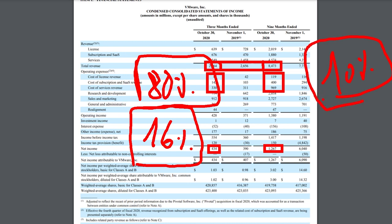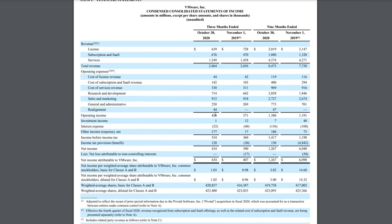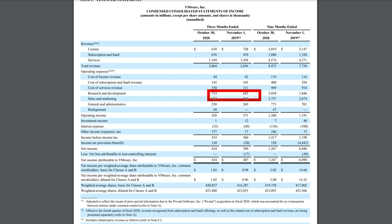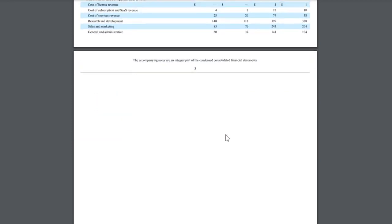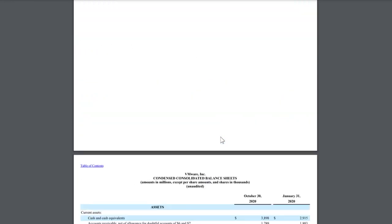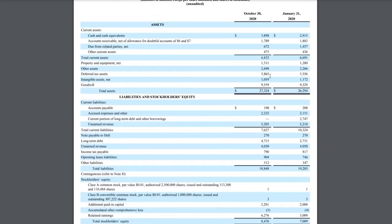Looking at expenses over time: their sales and marketing actually reduced from last year, and I don't like to see a lot of sales and marketing expenses. However, R&D increased significantly. A company that increases R&D while decreasing marketing expenses is a company I specifically like.